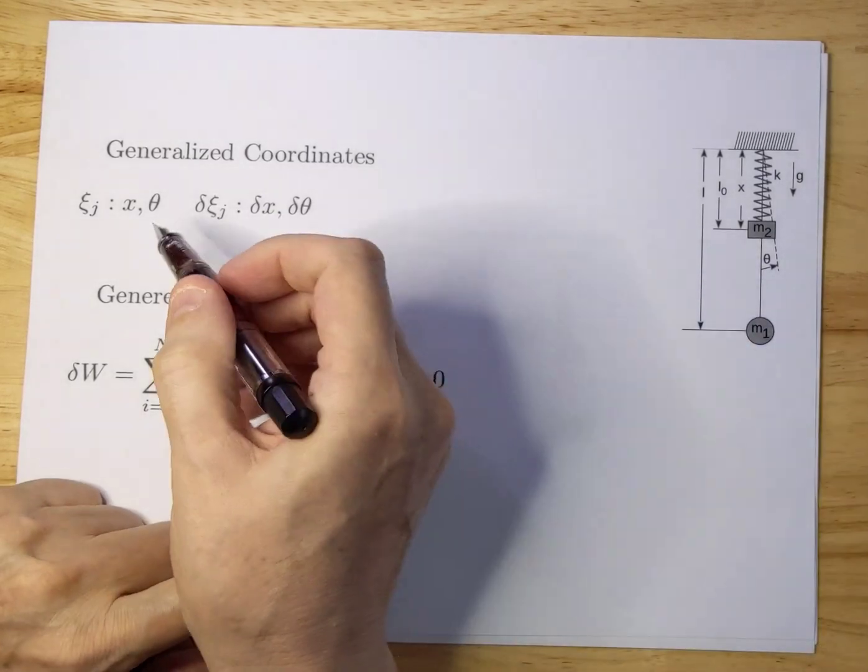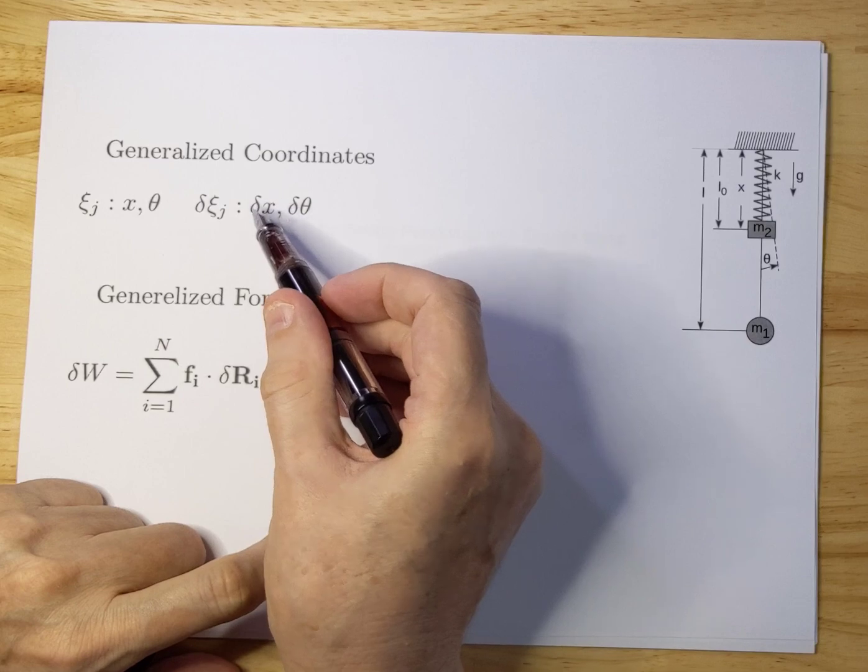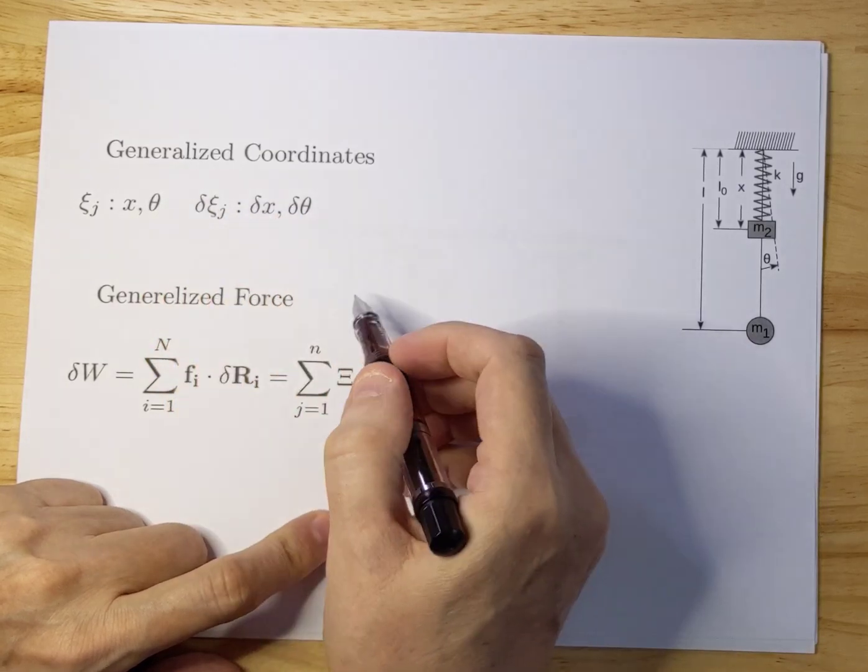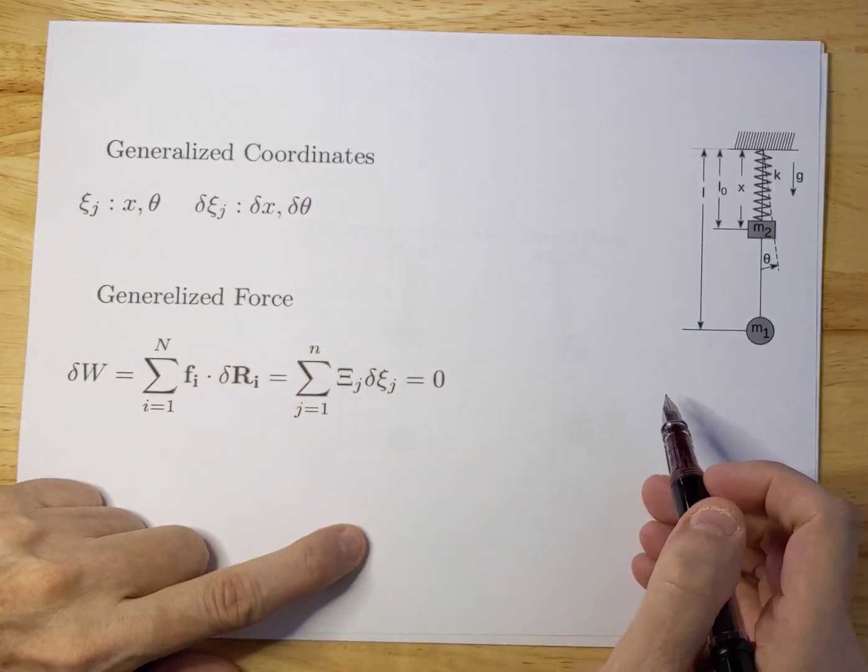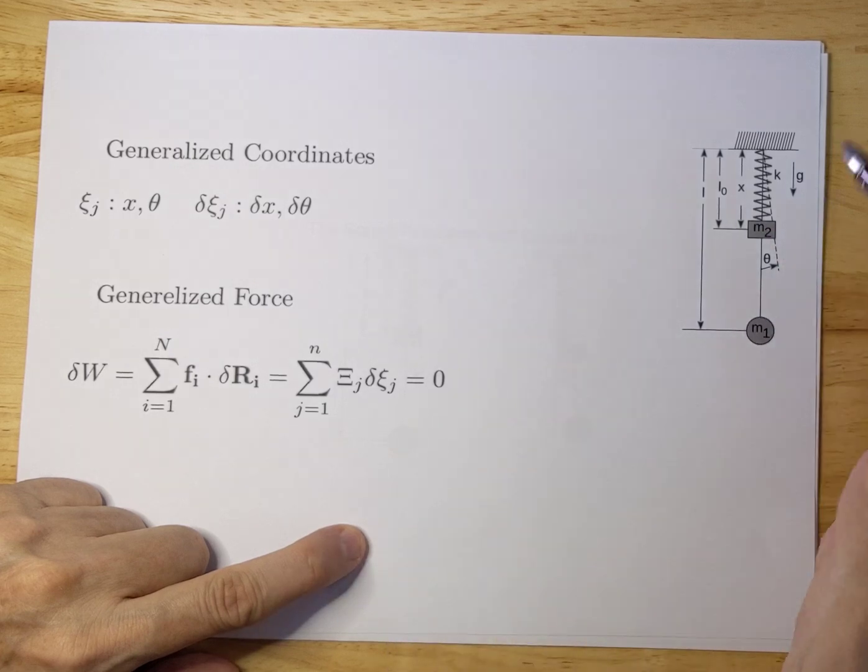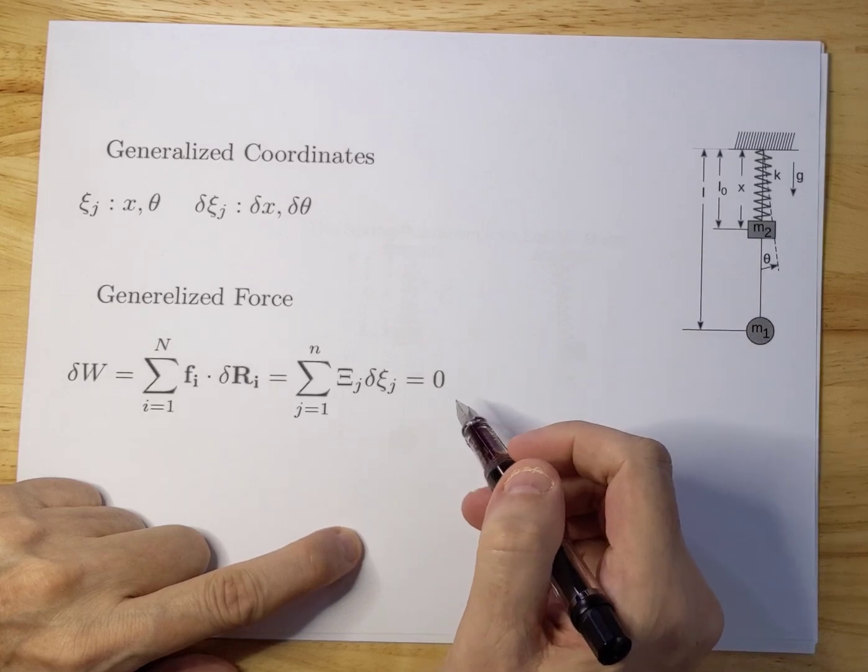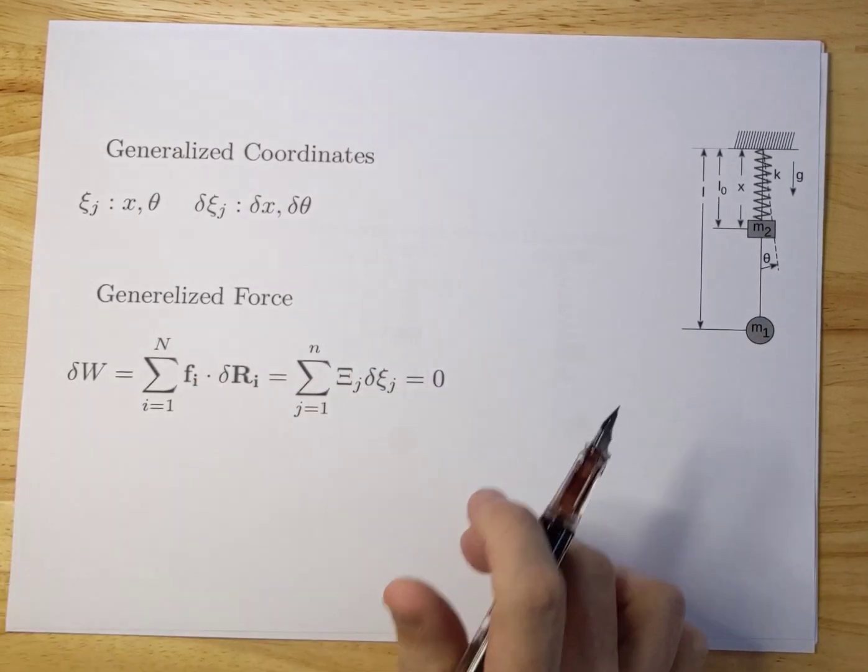The generalized coordinates are X and theta and the infinitesimal movements associated with those are delta X and delta theta. We don't have any generalized forces so they will always be zero. There are no non-conservative forces in the system, no dampening systems, so all generalized forces as a consequence are zero.